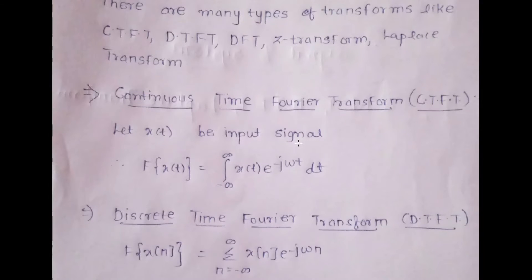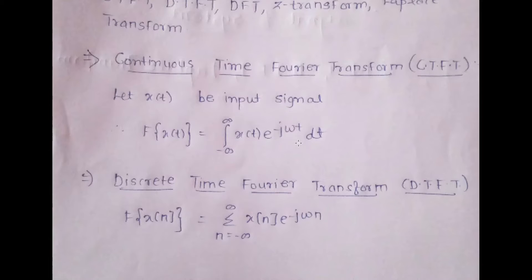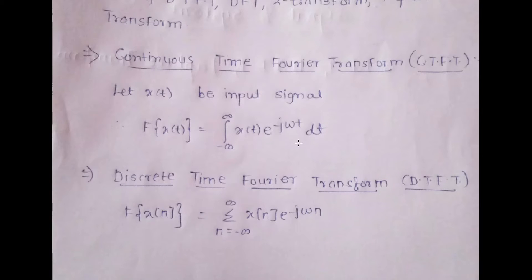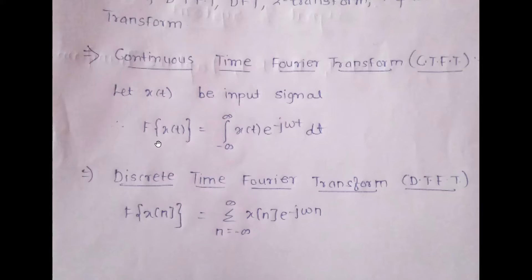We will now talk about CTFT — the continuous time Fourier transform. Since it's a continuous time signal, the input is x(t). The Fourier transform of x(t) is given as: X(ω) = integration from minus infinity to infinity of x(t) e raised to minus j omega t dt.